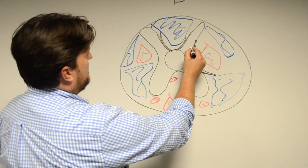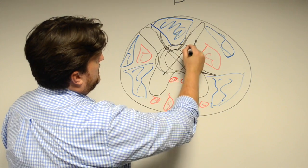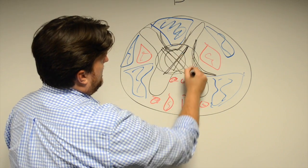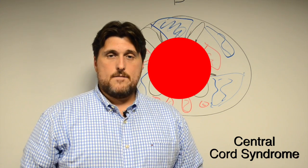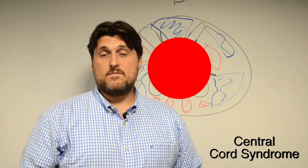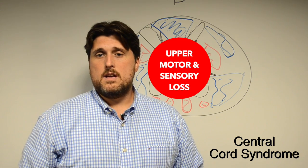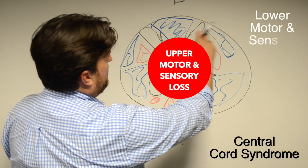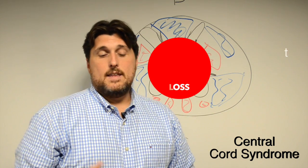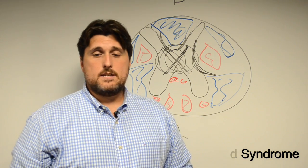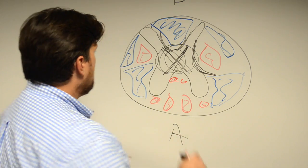Central cord syndrome essentially damages the center portion of the cord. So when you have that central portion of the cord damaged, what you have is upper extremities are affected. Person loses involvement, loses upper extremity activity, as well as upper extremity sensation. But the lower extremities, which are around the perimeter, are preserved, and they do not lose that. The common name for this is a walking para, a walking paraplegia.